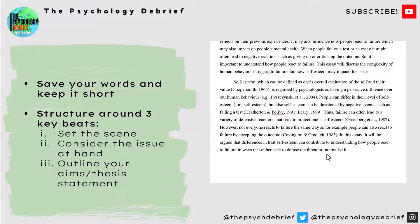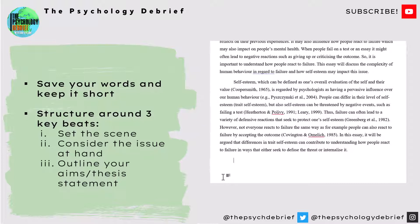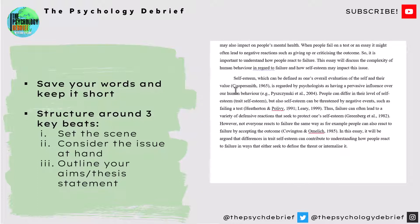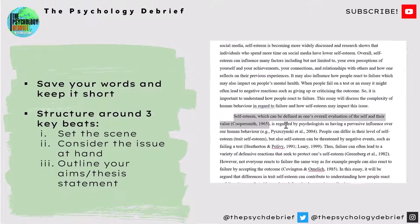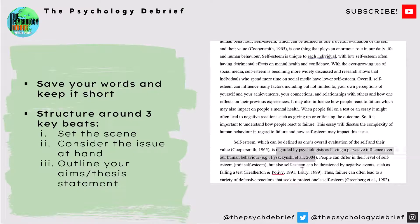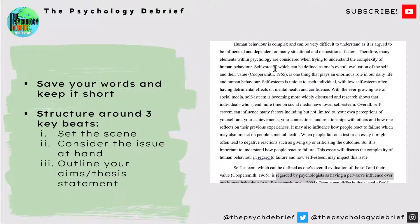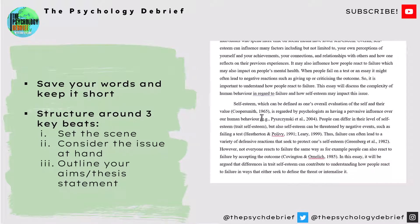Here is an adapted version of that introduction, which is now firstly shorter — just under 150 words, so it's not too long. It certainly tries to reserve as many words as possible for the main body where we can elaborate on more key and pertinent details. What we've done is opened up the topic with the definition and made reference to how self-esteem can have a pervasive influence over human behavior, with a citation to show that our ideas are well backed up by sources. Then we get to the middle section, which sets up the essay question at hand and the problem it concerns. In comparison to the original version, we've kept much more explicitly on topic to the issue of self-esteem and failure.